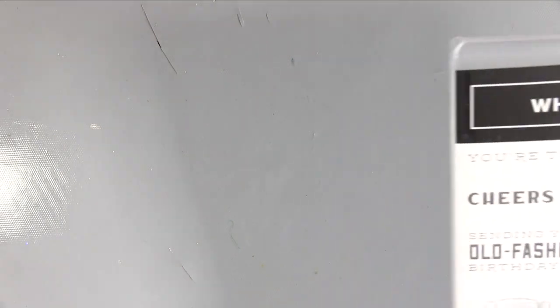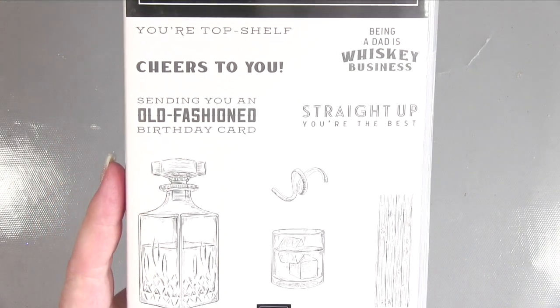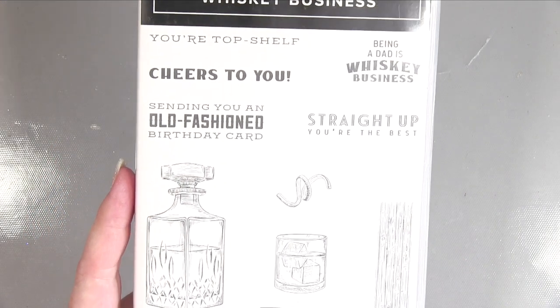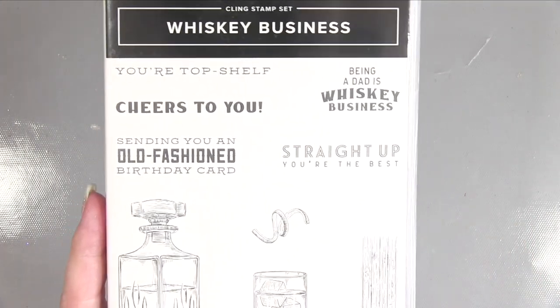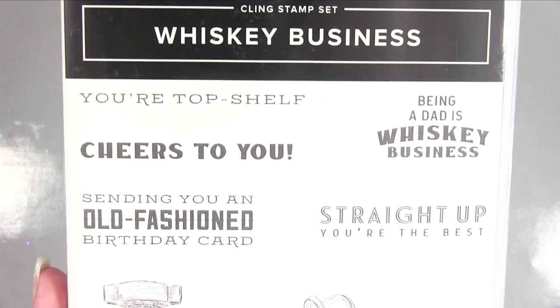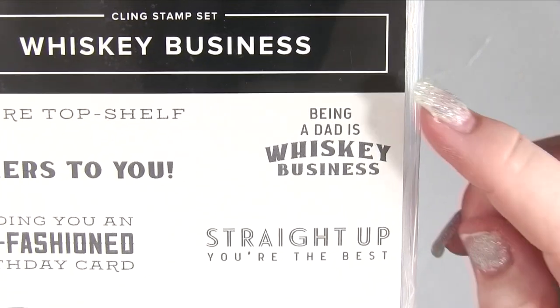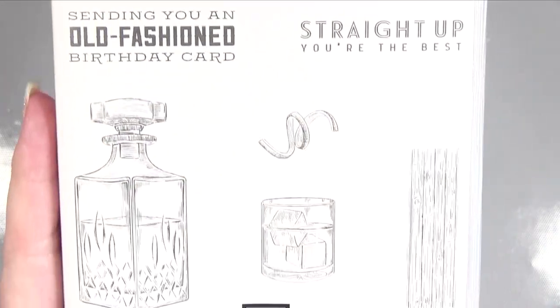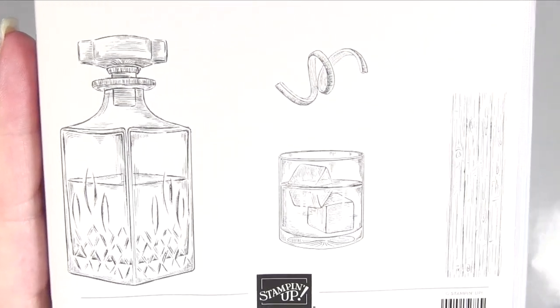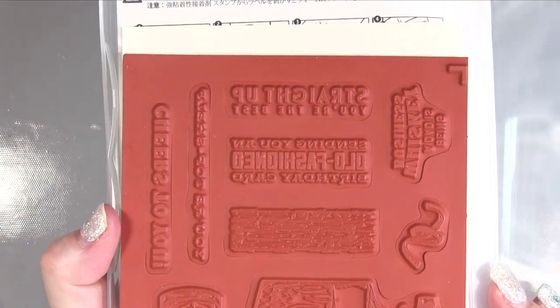And then the last stamp set that I got is this one called Whiskey Business. It's just nice to find a nice man's inverted commas, it's I guess aimed at the man in your life. There's lots of nice sentiments and that is kind of cool for Father's Day and then you've got a birthday one, just generic ones and you've got the lovely decanter, the glass and etc. This is again red rubber stamps. So that's all my stamp sets.